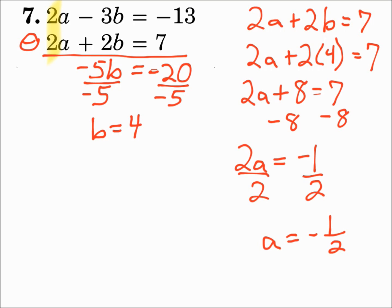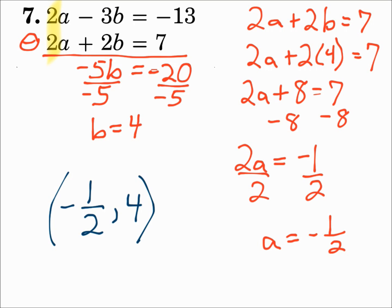Write your answer as an ordered pair. I know it's not x and y, but you can still go alphabetical — a comma b. It'll be negative one half comma 4. So when you solve a system by elimination, make sure everything's lined up — your x's, then your y's, then your equals, and then your constants. Pick a variable with the same coefficient in each equation. If the signs on that variable are different, add the equations together. If the signs are the same, subtract the equations. One variable will eliminate — solve for the other, then substitute that value into either equation and solve for the remaining variable. Finally, write your answer as an ordered pair.